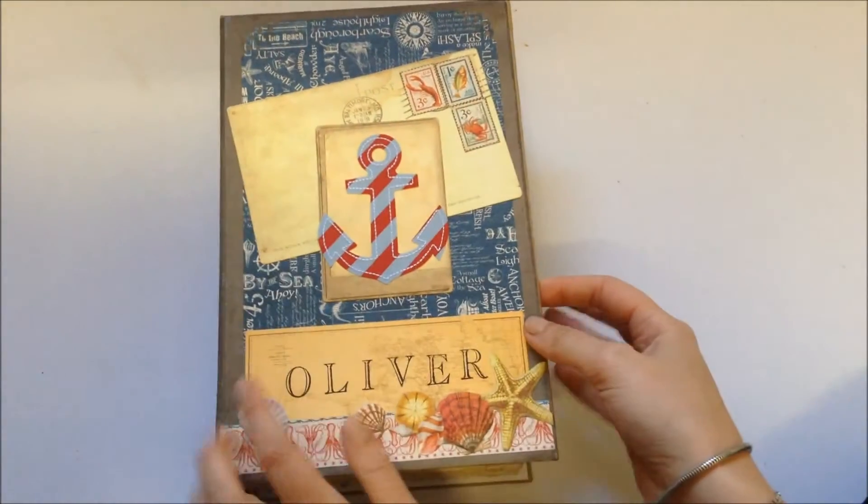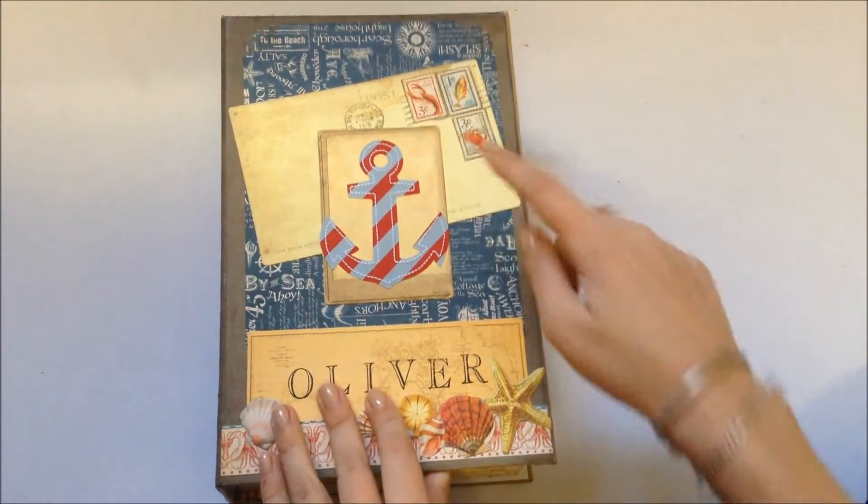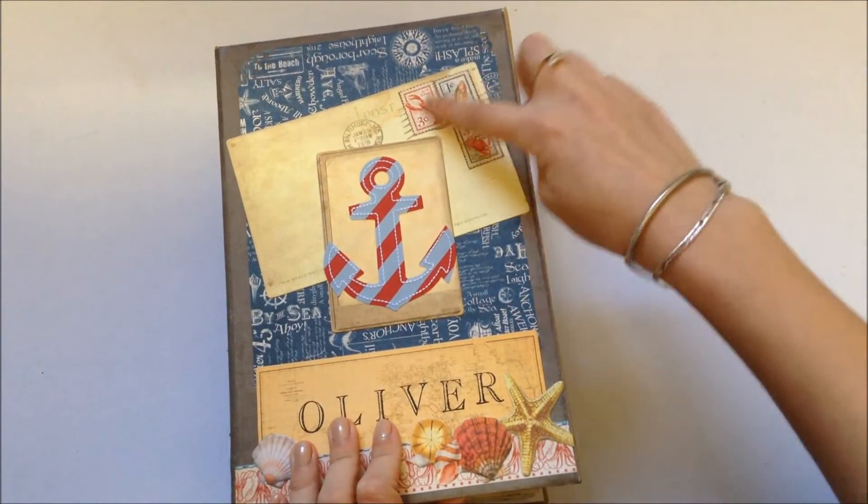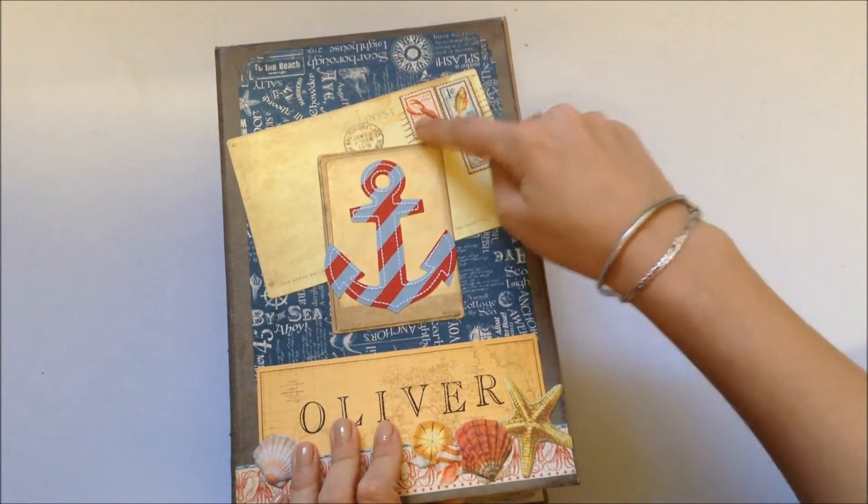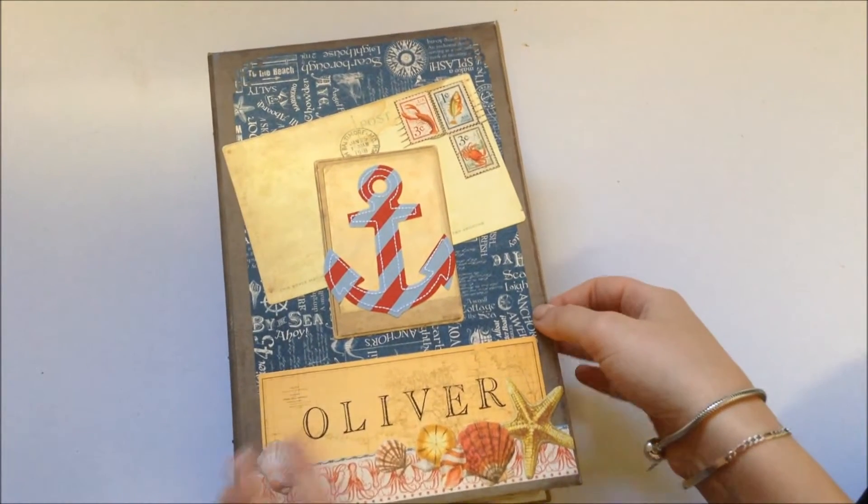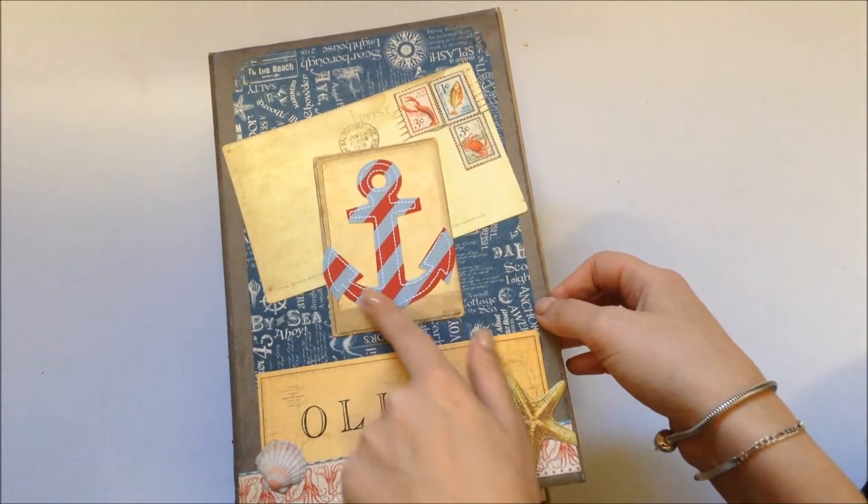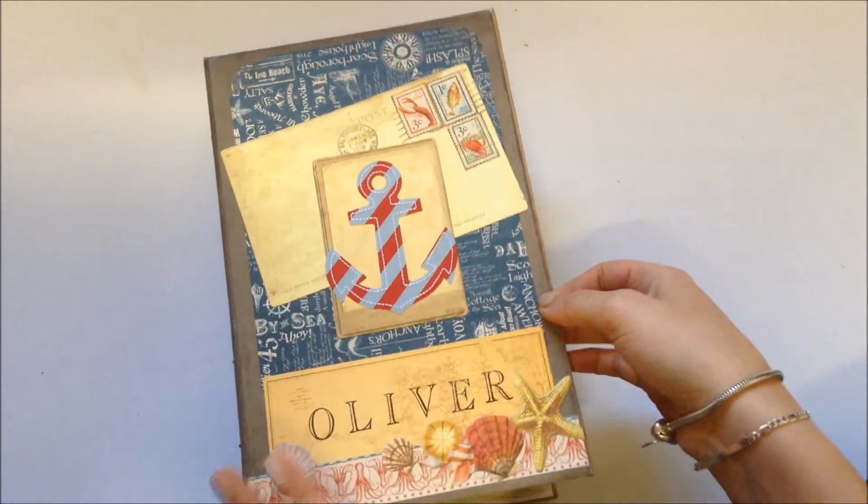I stamped his name on the map one, and on the postcard one, I covered over the stamp they had with stamps from the collection to make it more nautical-themed. This was actually an iron-on, so it was meant for fabric, but I love it on here. It looks really cool, I reckon.